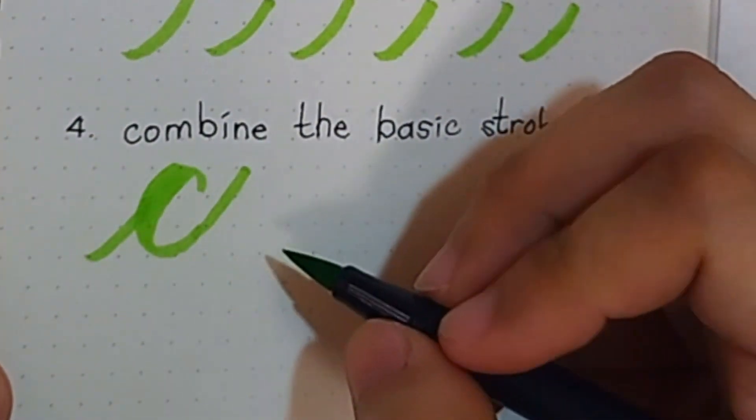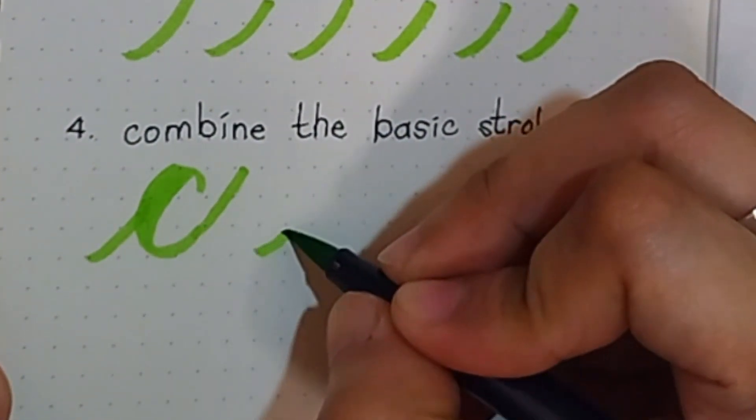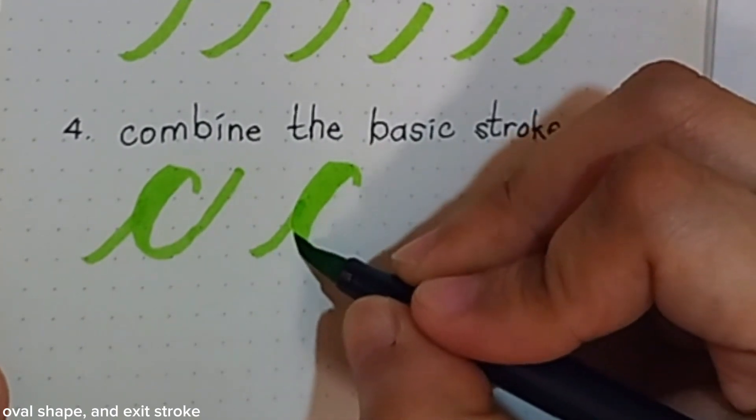Now let's combine the basic strokes to form a letter C: entrance stroke, half oval shape, and exit stroke.